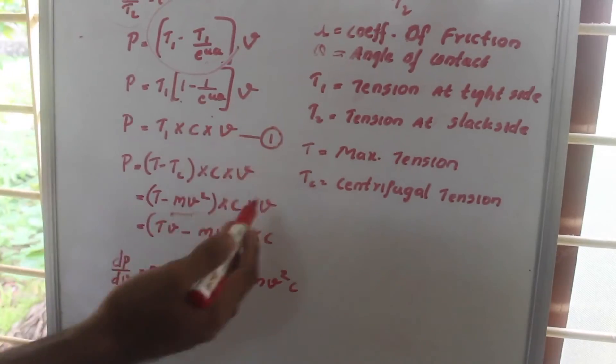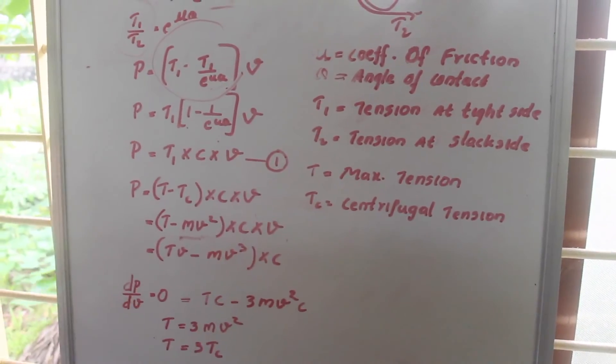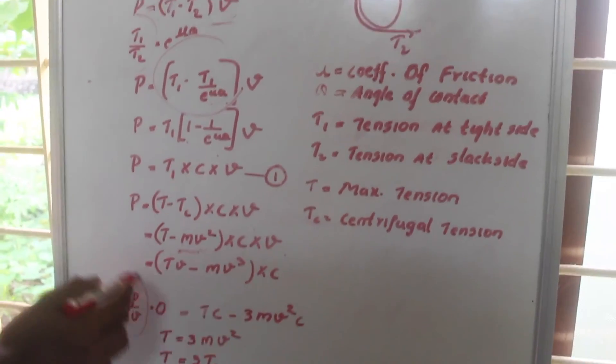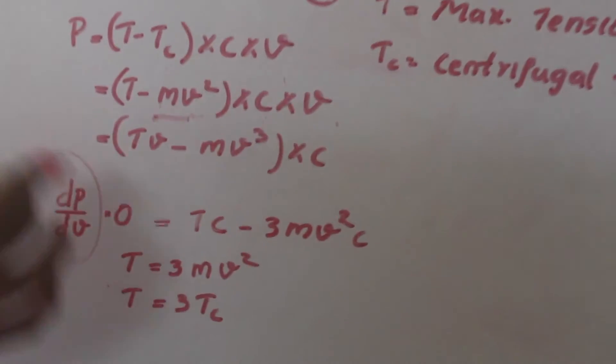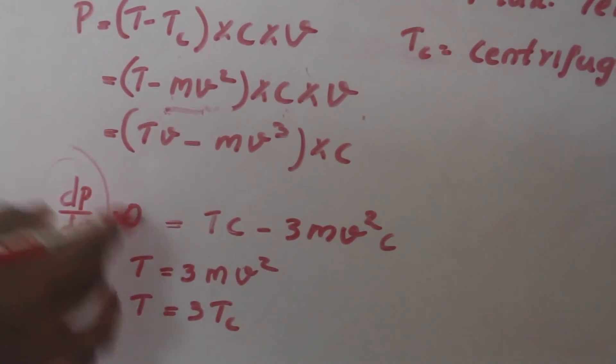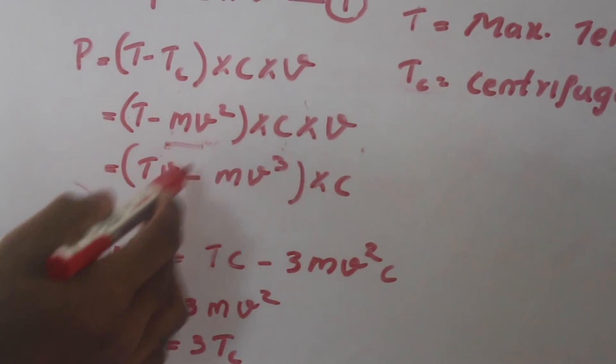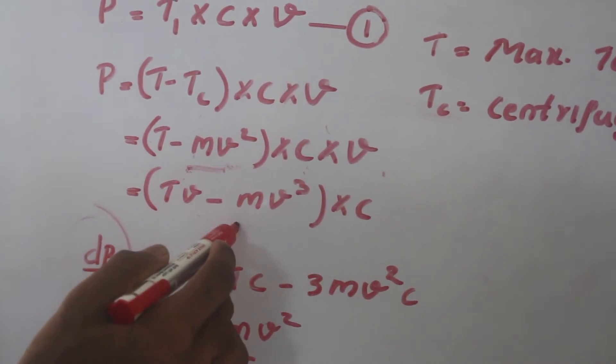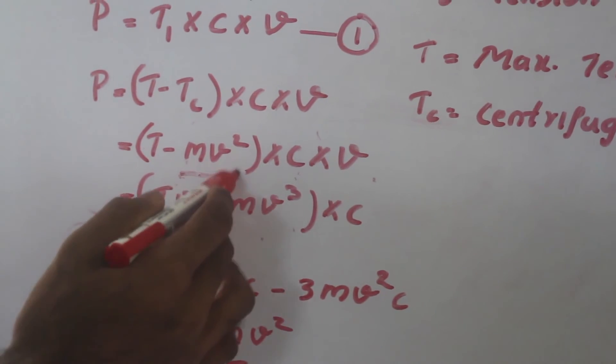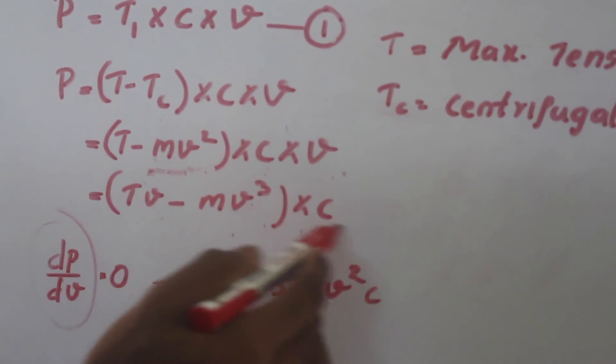For finding the maximum power transmission, the first derivative of the power with respect to velocity must be equal to 0. From here we see that this equation becomes T times v minus m v cubed, where m v squared times v equals m v cubed times c.